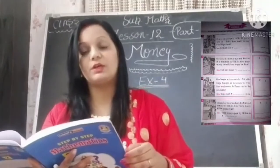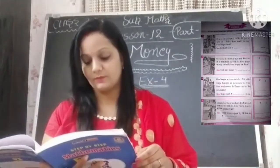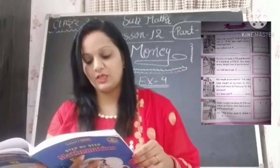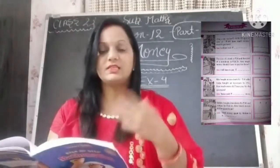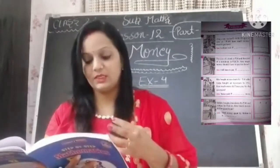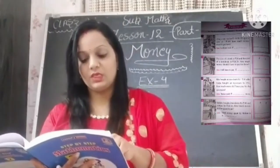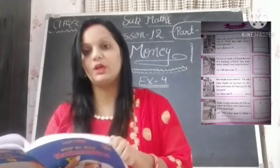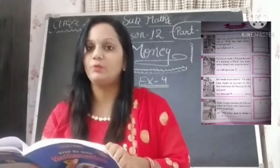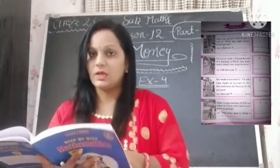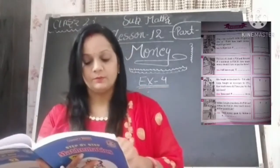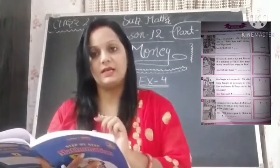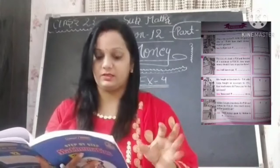So yahan hamen subtraction karna hai. Number 2: The cost of a book is rupees 27 and the cost of a notebook is 20.50 rupees. How much money should I give to pay for these? Mujhe iske liye kitne money deni padegi? Ek book ki keemat hai 26 rupees aur notebook ki hai 20 rupees 50 paisa. Yahan paisa bhi aa gaye aur rupees bhi — toh hamen yahan add karna hai, dono numbers likh ke add kar dene hain.